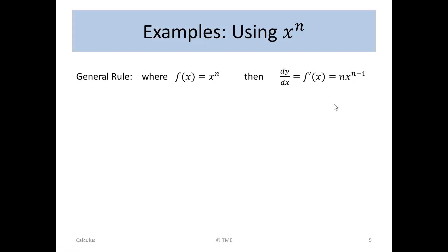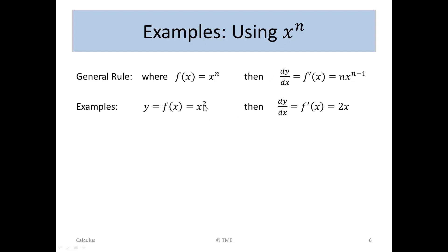We'll now use that rule for some examples. We've written it out here for use, where we're dealing with x to the power of n. So the first example we'll use is x squared. If y is x squared, then dy/dx is: we take the 2 down, it becomes 2x, and 2 minus 1 is 1, and anything to the power of 1 is just itself. So, 2x.